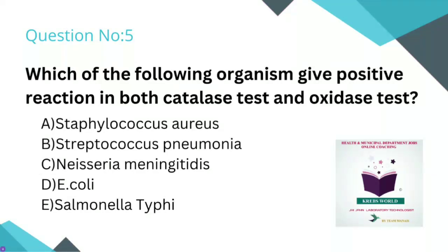Option A: Staphylococcus aureus. Option B: Streptococcus pneumoniae. Option C: Neisseria meningitidis. Option D: E. coli. Option E: Salmonella typhi. Enterobacteriaceae family members are catalase-positive and oxidase-negative. Staphylococcus aureus and Streptococcus pneumoniae are both gram-positive organisms.